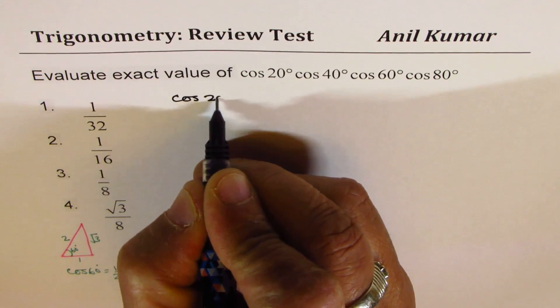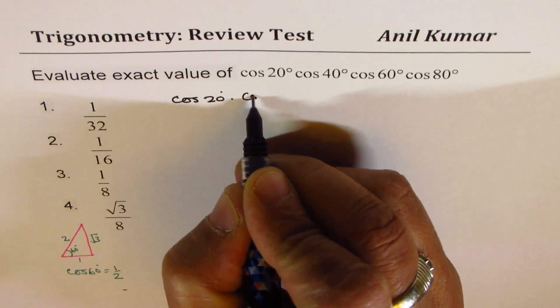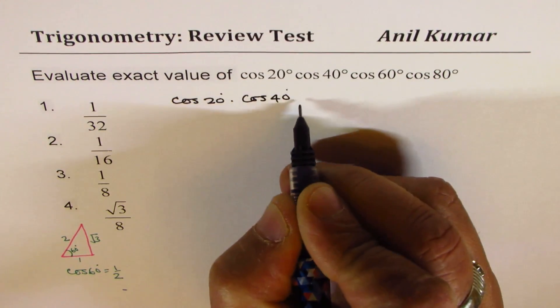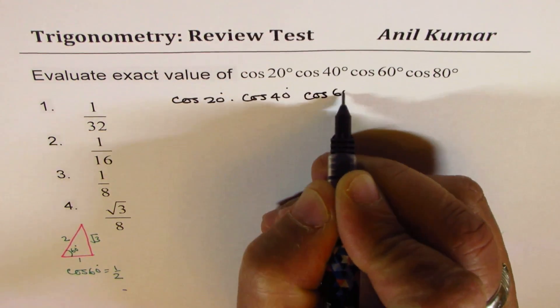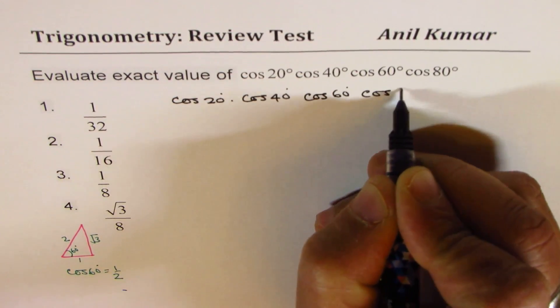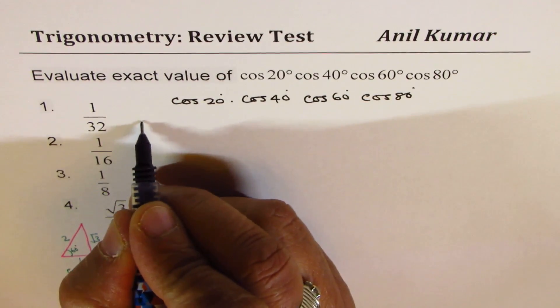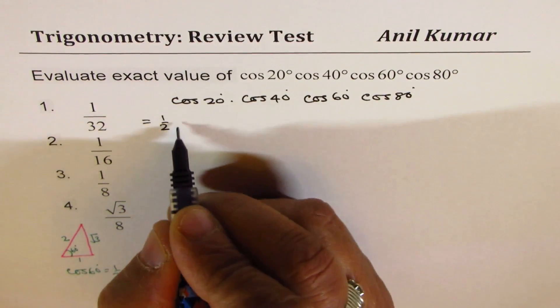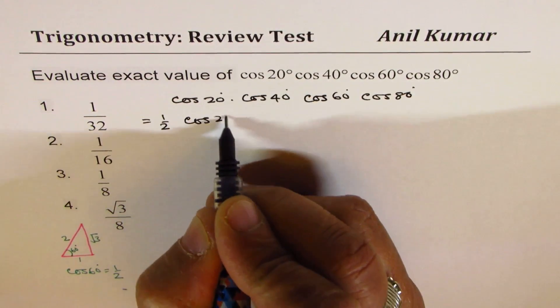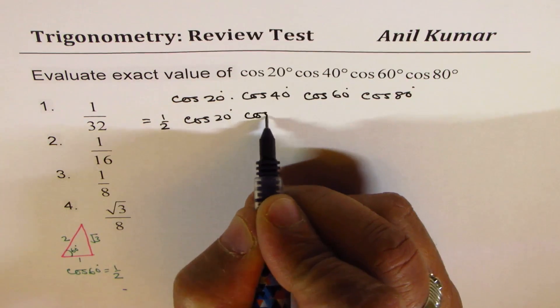We are given cos of 20° times cos of 40° times cos of 60° times cos of 80°. Since cos of 60° is half, we could write this as equal to half of cos of 20°, cos of 40° times cos of 80°.